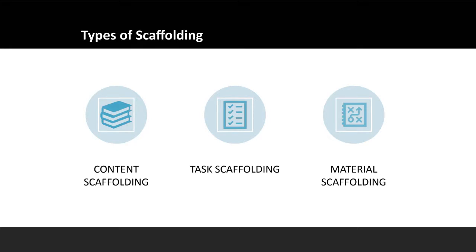Task scaffolding is where the instructor outlines the steps in a process and then models those steps for students while discussing their thought process aloud. The process involves the instructor fully demonstrating and explaining the process step by step, then slowly handing over the process to students to accomplish step by step on their own. During the process, the instructor models each individual step, narrating what they're doing, and then students practice independently as the instructor provides guidance as needed.